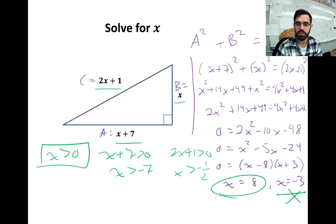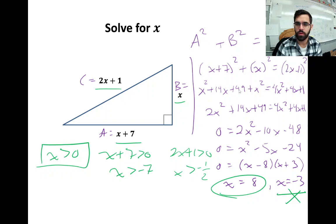This triangle has the same Pythagorean theorem setup, but the question is different — solve for x. Once we set up the Pythagorean theorem, we'll use the box method, collect like terms, and write it as a quadratic in standard form. We can divide each side by 2, factor the polynomial, and get two solutions: x = 8 and x = -3.